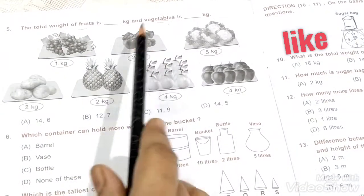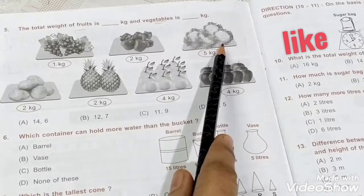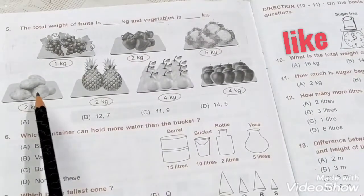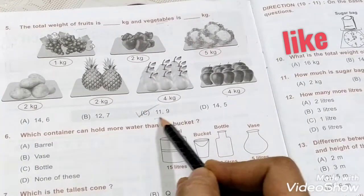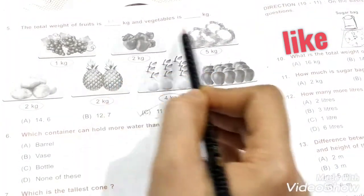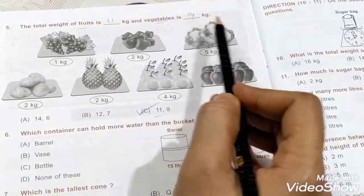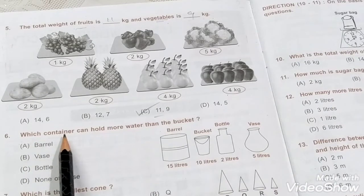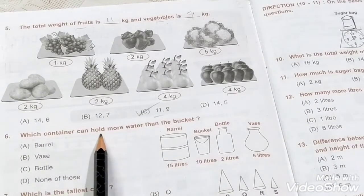Okay, vegetables: two kg of capsicum, two. Five, seven. Seven plus two is nine. The answer is correct: eleven kg of fruit, nine kg of vegetables.